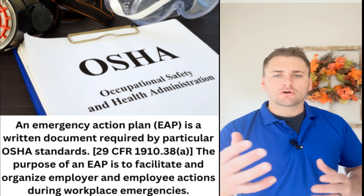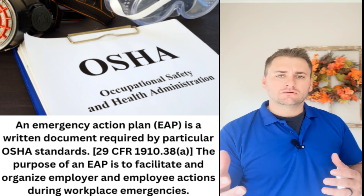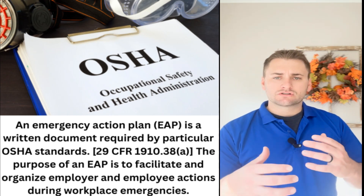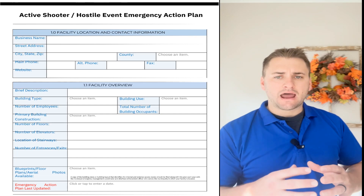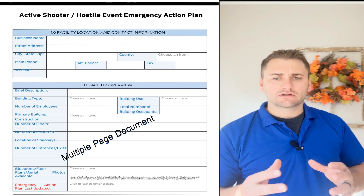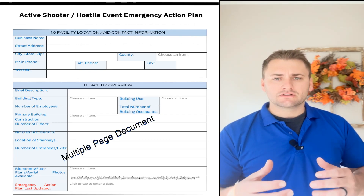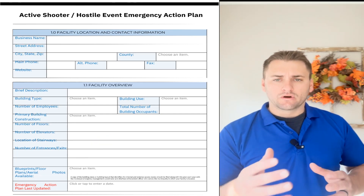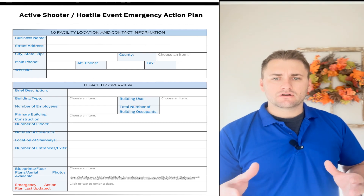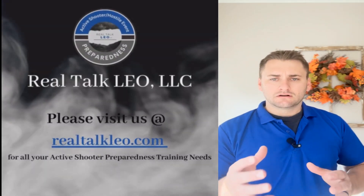As far as creating it, depending on the state you live in, if you simply go to your state website and type in 'active shooter emergency response plan,' you should find a nice simple template to fill out. If you want to take it a step further, head up to the link in our bio.